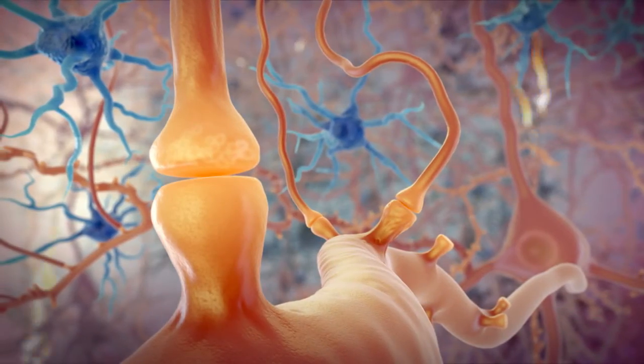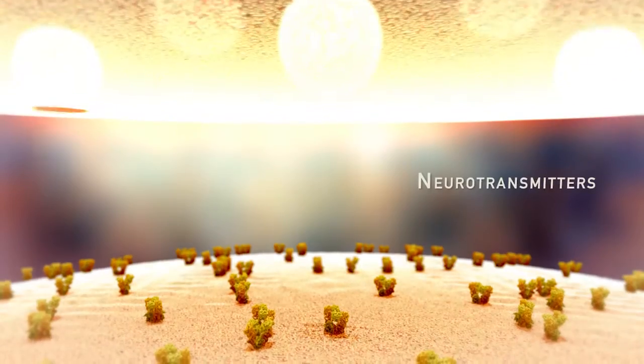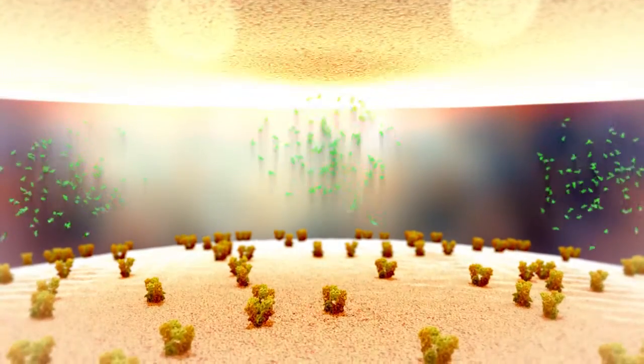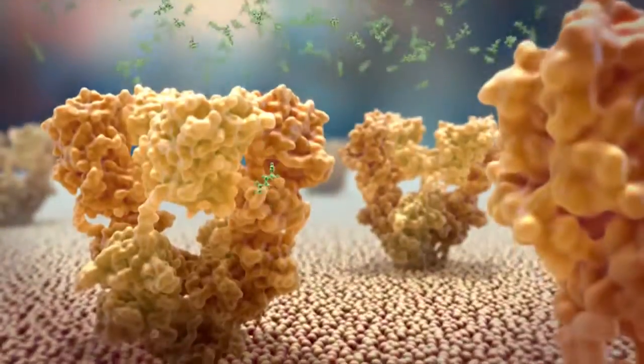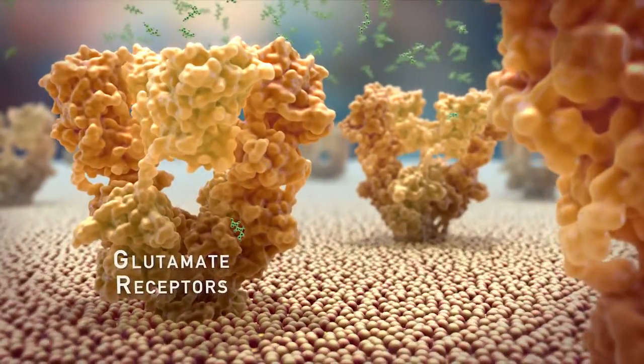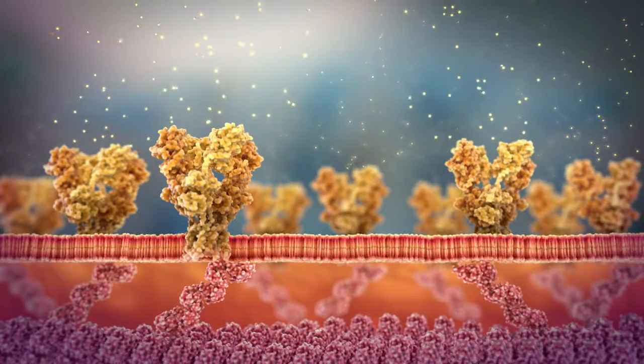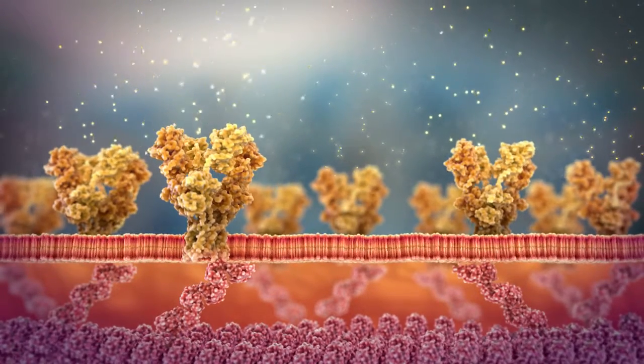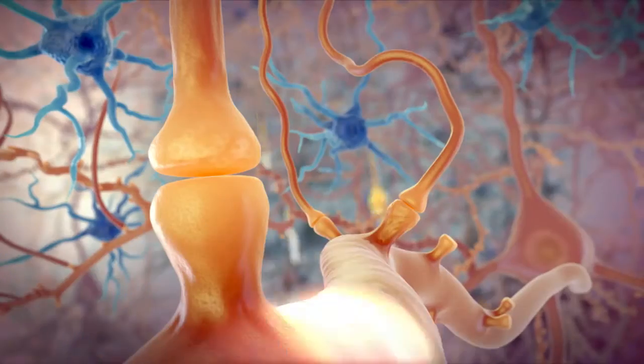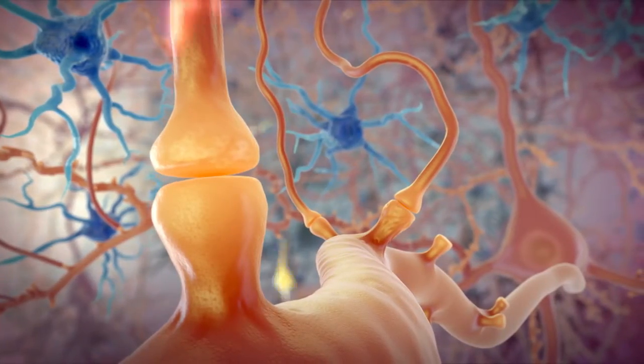When an electrical signal arrives at a synapse, neurotransmitters are released. They diffuse across the synapse and bind to glutamate receptors on the postsynaptic membrane. The activated receptor opens up, allowing ions to quickly pass through and pass the signal on to the next neuron.